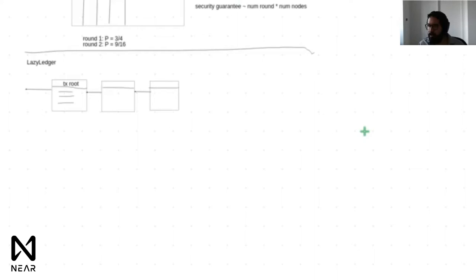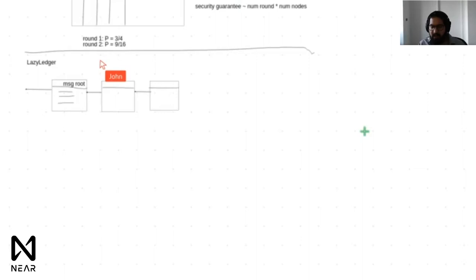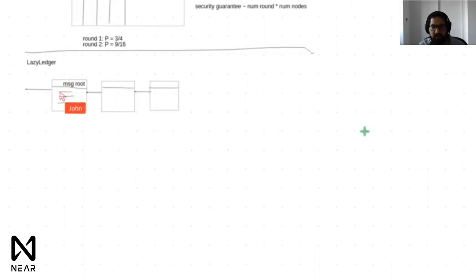So how does lazy ledger work? It commits to a list of messages — call it a message root — where a message is just some zeros and ones. The message has no effect on the lazy ledger state. In the idealized academic version, lazy ledger has no state at all. The messages don't affect lazy ledger state and in fact there is no lazy ledger state. The exact consensus process is orthogonal — you can use any consensus protocol on top of lazy ledger.